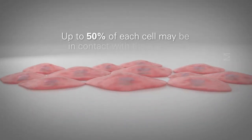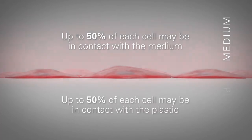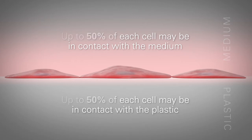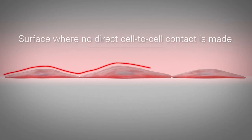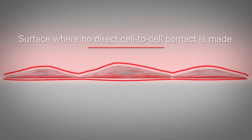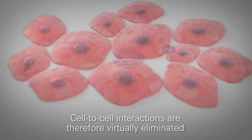Up to 50% of each cell may be in contact with the medium, and up to 50% of each cell may be in contact with the plastic. The red line shows the surface where no direct cell-to-cell contact is made. Cell-to-cell interactions are therefore virtually eliminated.